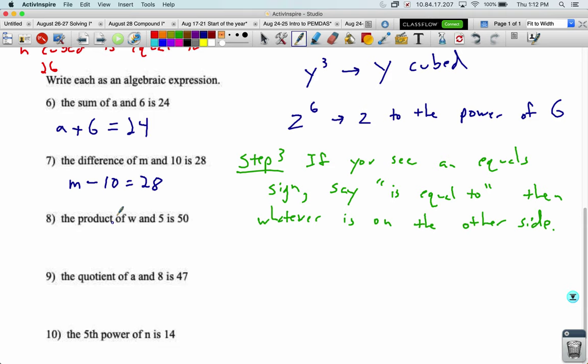Product of w and five is 50. So w dot five equals 50. Dot means multiply.